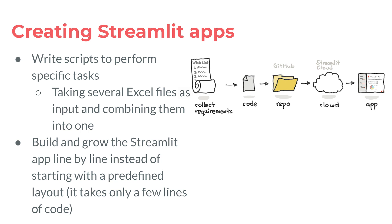Creating a Streamlit application essentially requires you to write a script that performs a specific task. For example, if you'd like to combine Excel files, you would write a script that iterates through the file list, reads it, and writes the contents out. Such data scripts can be embedded inside a Streamlit application. You could build it incrementally — starting with a simple Hello World app, then slowly adding interactive widgets, data frames, file uploaders, output widgets, and more. The application doesn't have to be built in one sitting; you could grow it incrementally and it will evolve.